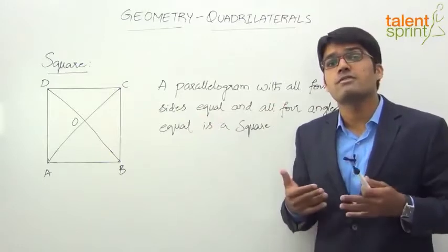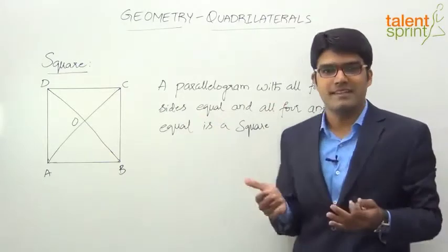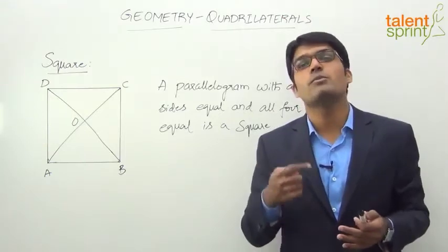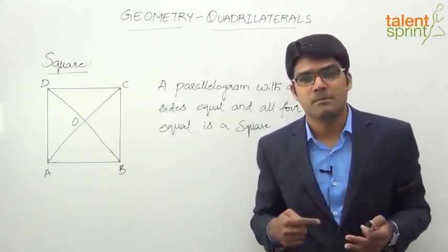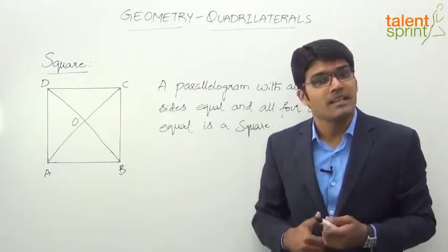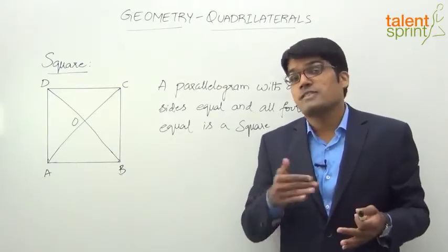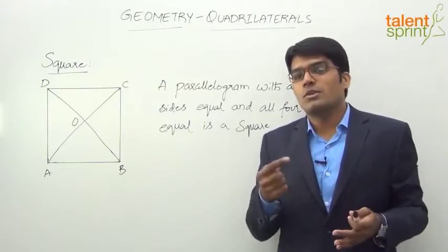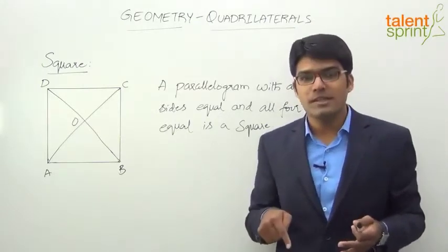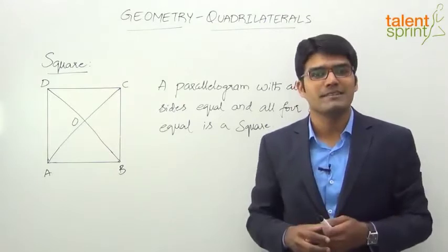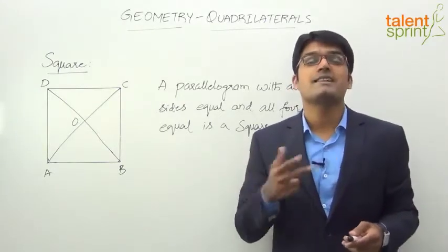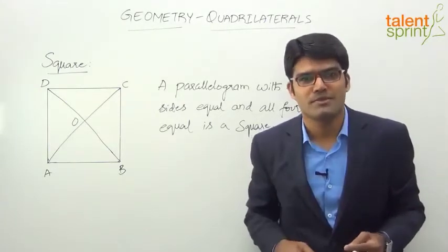A rectangle where all four sides are equal is a square. In a rectangle, all four angles are equal but all four sides are not equal — only the opposite sides are equal. But if all four sides also become equal, then that rectangle is a square. A rhombus has all four sides equal but the angles are not all equal — only opposite angles are equal. But if all the angles also become equal, then that rhombus is a square. So a square is a special parallelogram, a special rectangle, and a special rhombus.